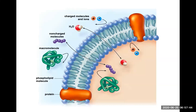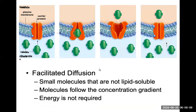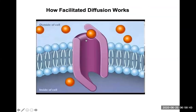We'll finish this lecture by looking at how things get through the membrane. This is a plasma membrane showing the phospholipid bilayer with some carrier proteins. Non-charged molecules and water can easily get through, but macromolecules, charged molecules, and ions that are too big may need some help — and this is where we come to facilitated diffusion. Facilitated diffusion is the diffusion of small molecules with the help of a carrier protein through a membrane, following the concentration gradient without requiring energy.